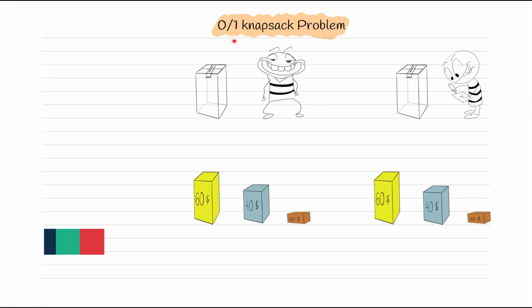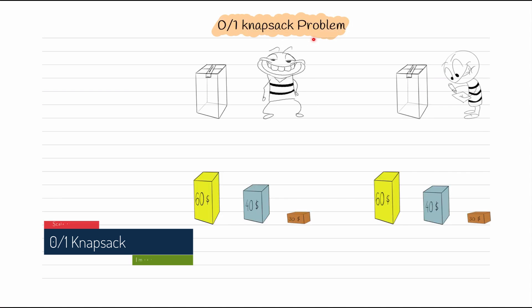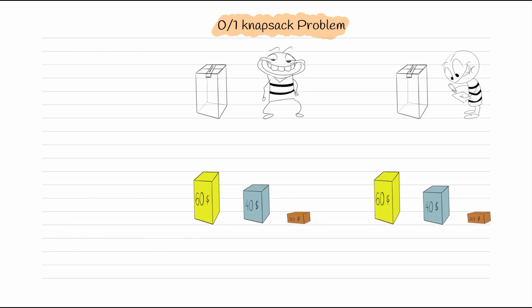Today we will learn about the zero-one knapsack problem. To better understand, we will go through an example. There were two friends who were thieves by profession — one was greedy and the other used dynamic programming. They both had identical bags of the same size. Using number of lines as size, this bag is of size four.